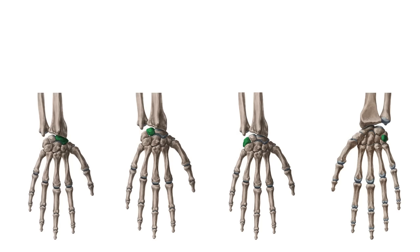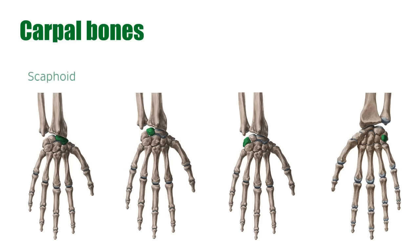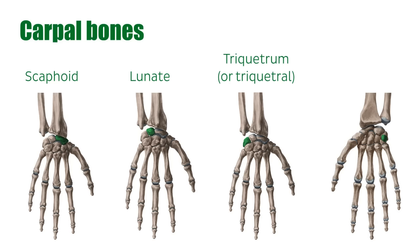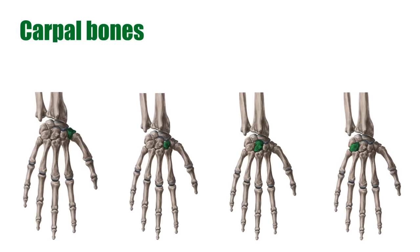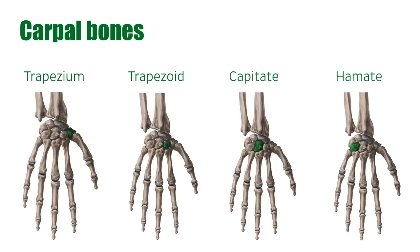There are eight carpal bones which make up the wrist, and each has a unique shape and name: scaphoid, lunate, triquetrum, pisiform, trapezium, trapezoid, capitate, and hamate. They are stacked in two rows of four.